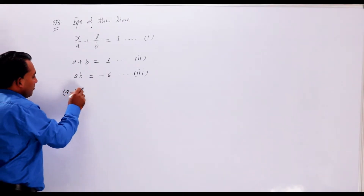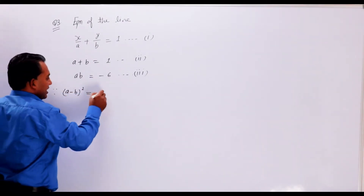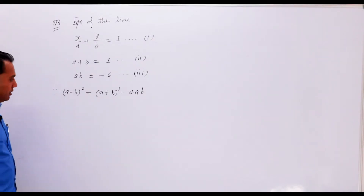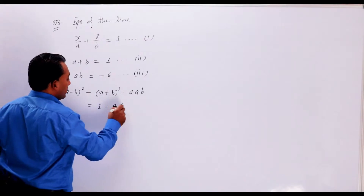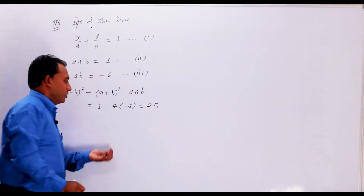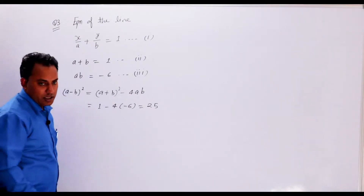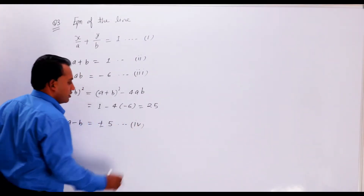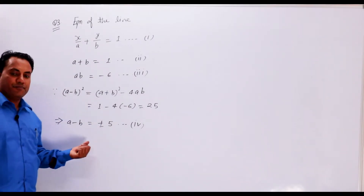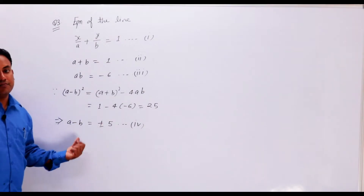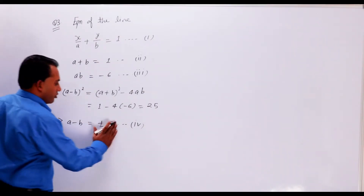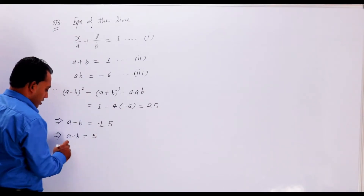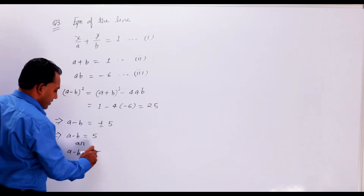A plus B equals 1, and using the identity A plus B whole squared minus 4AB, we can find A minus B. This gives us A minus B is equal to 5, and A minus B is equal to minus 5.